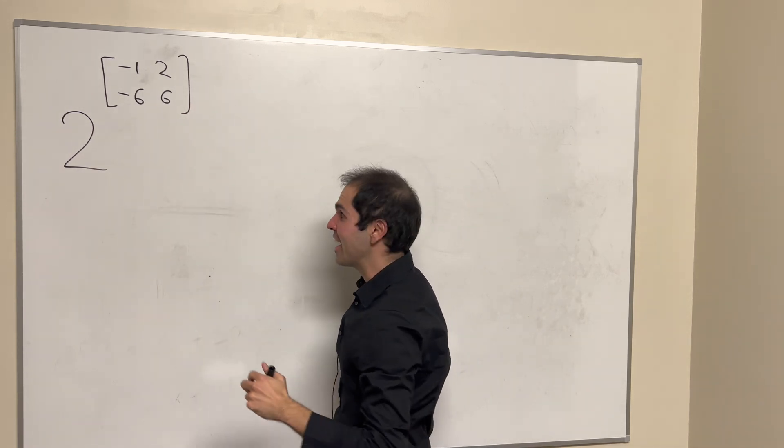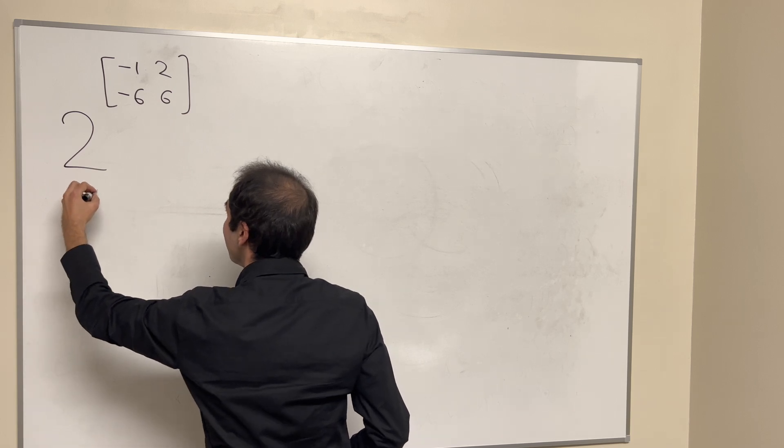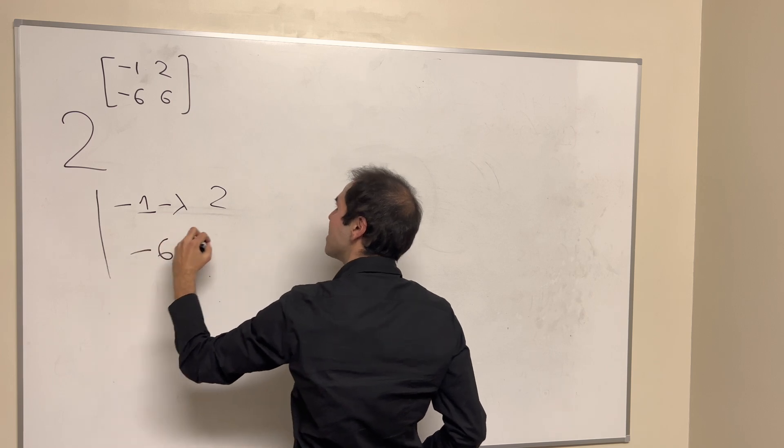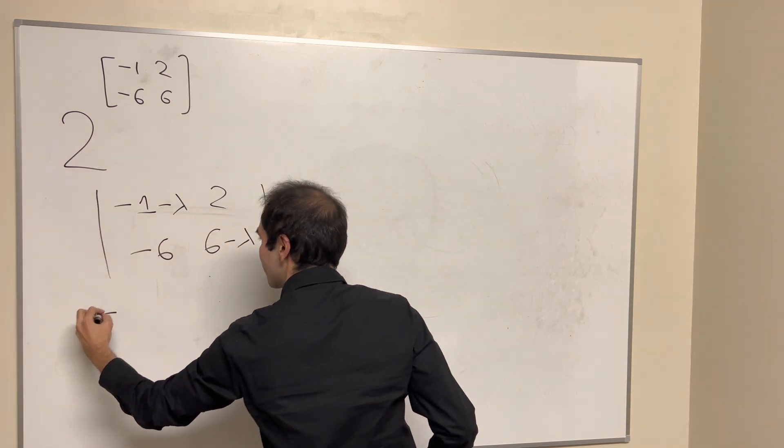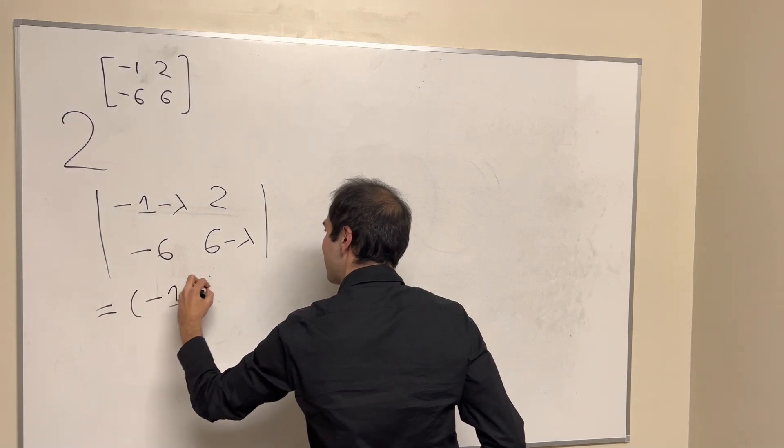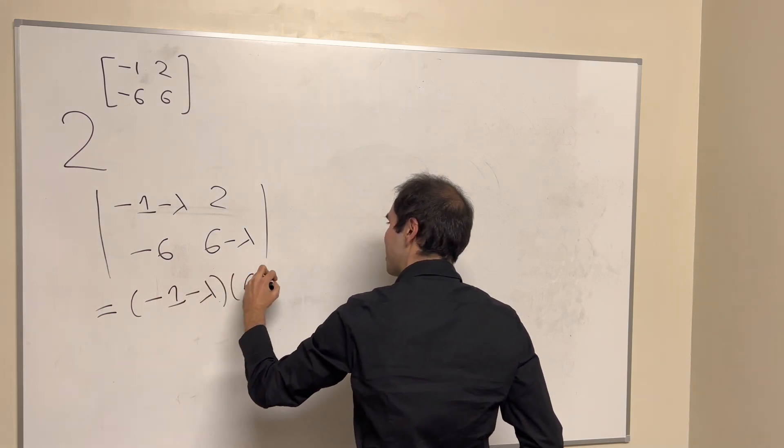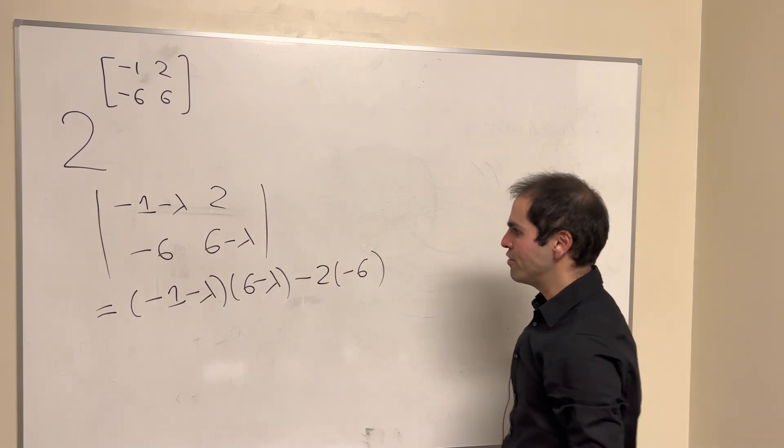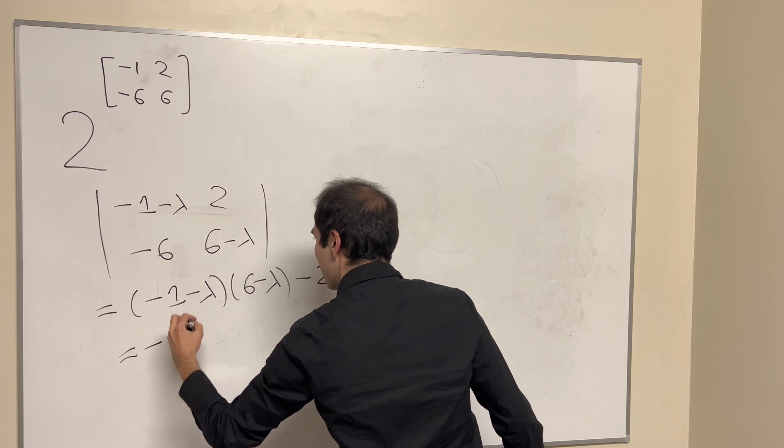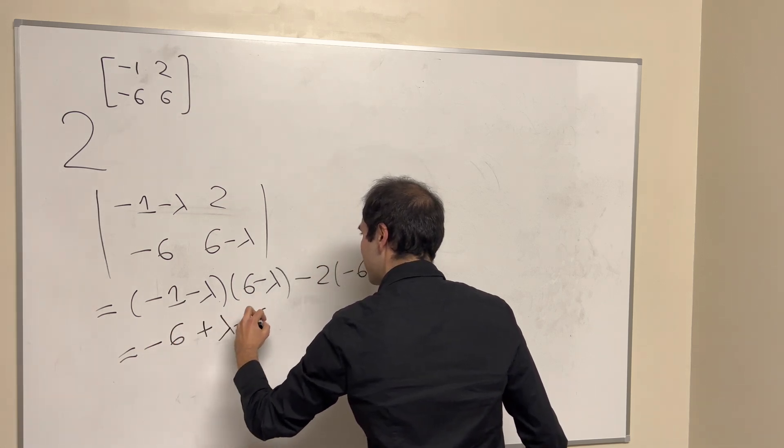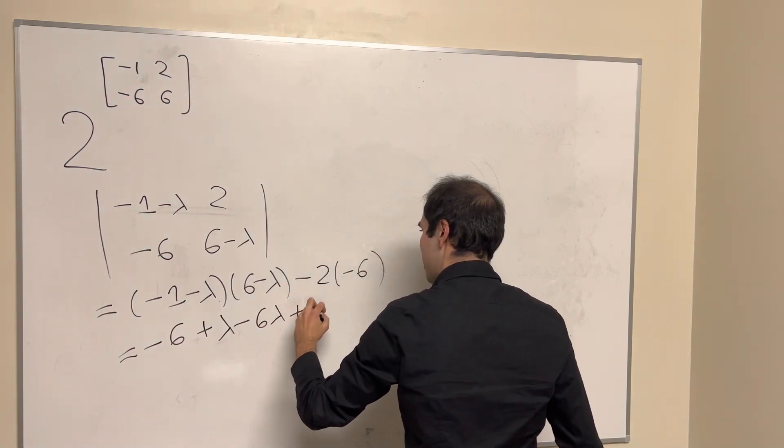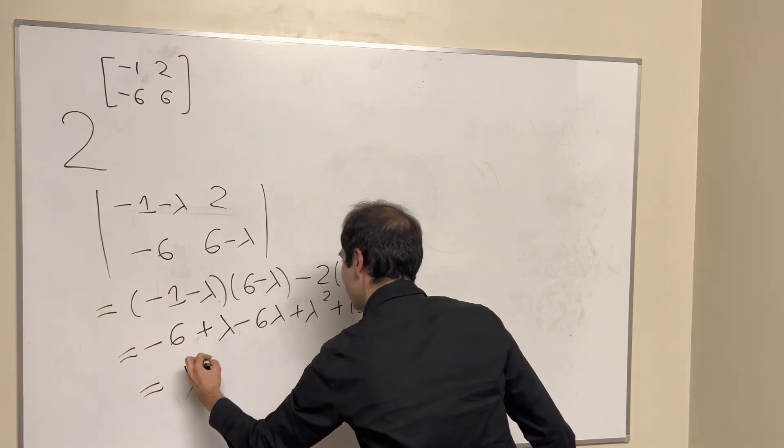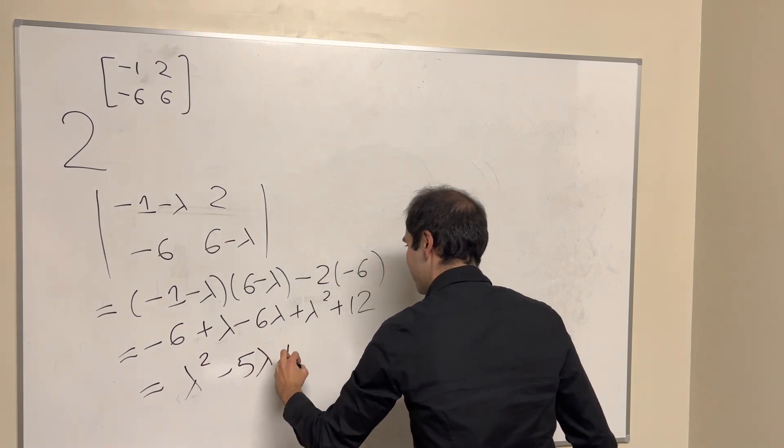So let's calculate the eigenvalues of this matrix. So determinant of this minus lambda, 2 minus 6, 6 minus lambda, that gives you minus 1 minus lambda, 6 minus lambda, minus 2 times minus 6, which if you fill it out, it gives you minus 6 plus lambda, minus 6 lambda, plus lambda squared, plus 12. And finally, we get lambda squared minus 5 lambda, plus 6,